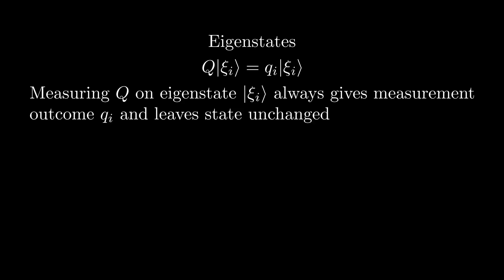Eigenstates of an observable correspond to states with fixed measurement outcomes, meaning that measuring the corresponding observable for this state will always return the same measurement outcome each time and leave the state unchanged. For instance, the 1s orbital is an energy eigenstate of the hydrogen atom, meaning that this state has a fixed energy.